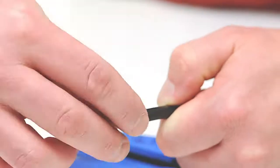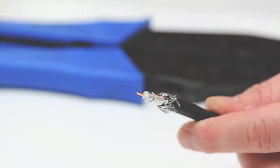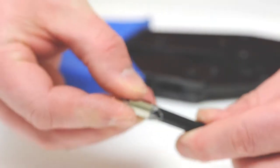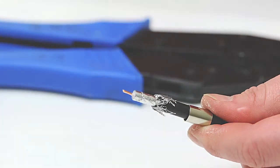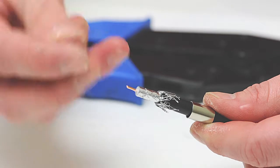Fold the braided shield on top of the jacket, slide the ferrule over the braid and the jacket. Insert the center pin of the center conductor.